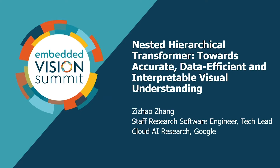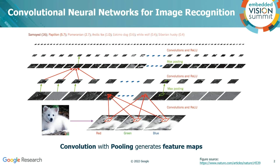To begin with, let's take a look at convolutional networks, which have successfully dominated the field of computer vision for over a decade. They have been applied in almost all kinds of vision tasks, from the cloud to the edge. This is how convolution works.